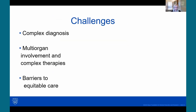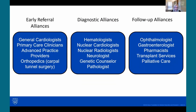Multi-organ involvement and complex therapies call for multidisciplinary alliances working together as a team. Early referral alliances include general cardiologists, primary care providers, advanced practice providers, and orthopedic colleagues who may be the first to interact with the patient. Diagnostic alliances include hematologists, nuclear cardiologists and radiologists, neurologists, geneticists, and pathologists. Follow-up alliances include ophthalmology, gastroenterology, pharmacy, transplant if warranted, and palliative care.